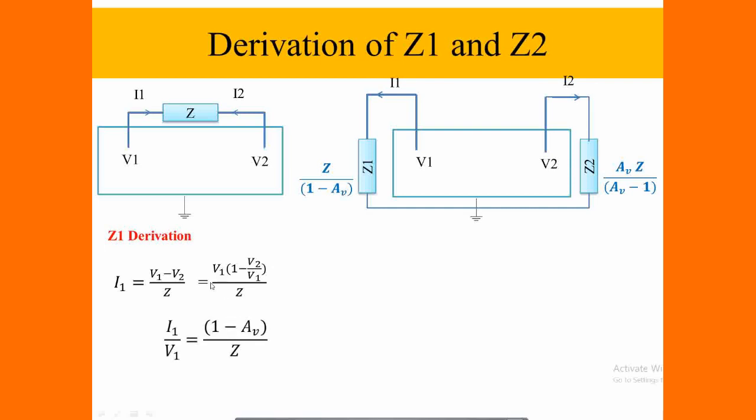Then take out the V1 towards the left side: I1 by V1 equal to 1 minus V2 by V1, nothing but output voltage to the input voltage. So we are taking that as the corresponding voltage gain as AV with respect to Z.